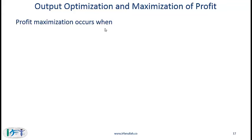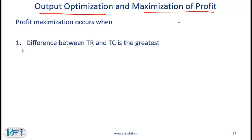We'll now talk about output optimization and maximization of profit. Profit maximization occurs when the difference between total revenue and total cost is the greatest. This is a fairly intuitive concept. Another strategy is to say that profit maximization occurs when marginal revenue is equal to marginal cost.